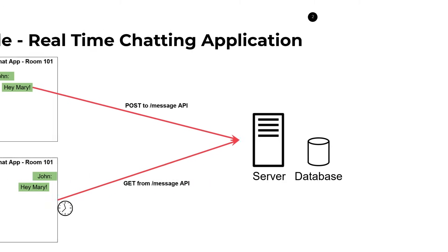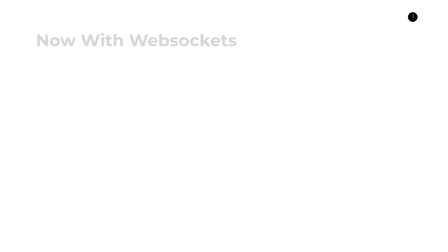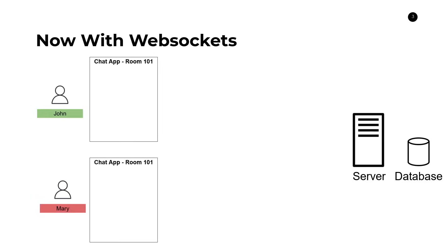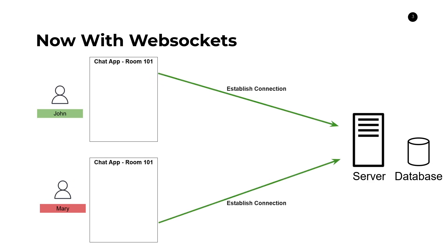Let's talk about WebSockets using this exact same example. We still have John and Mary, both with their versions of the application, and we still have a server and a database on the backend. Now, with WebSockets, on application load, both John's and Mary's applications will establish a connection to the server. This connection is basically saying to the server: "I am connected and I am ready to receive messages if anything changes." The server now knows that both John and Mary are present and is able to communicate with both of them.